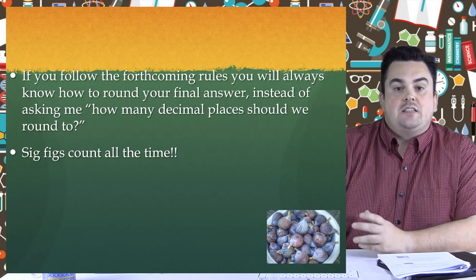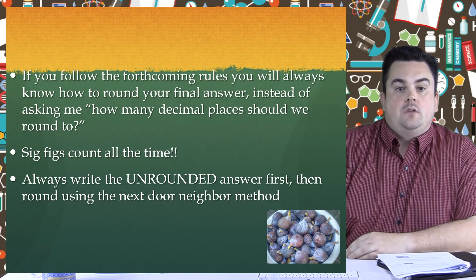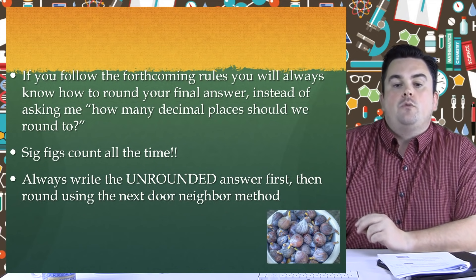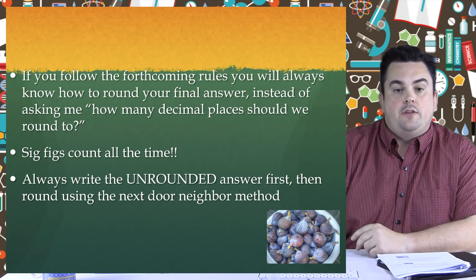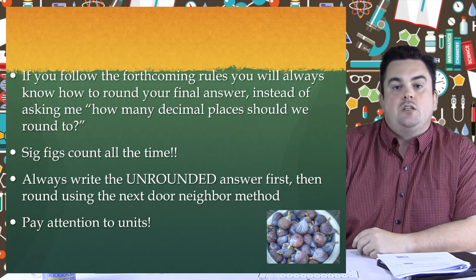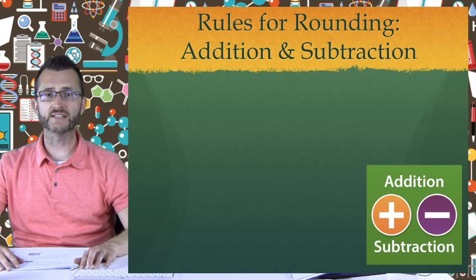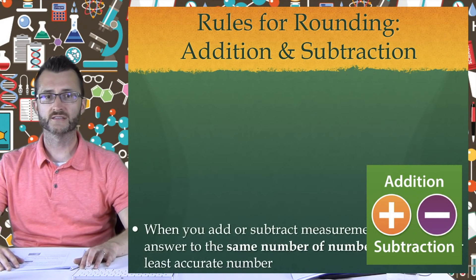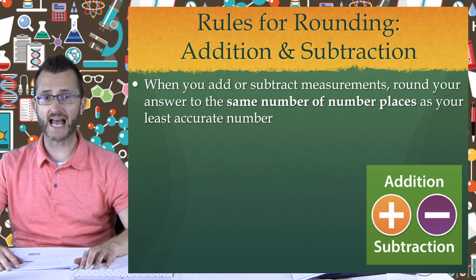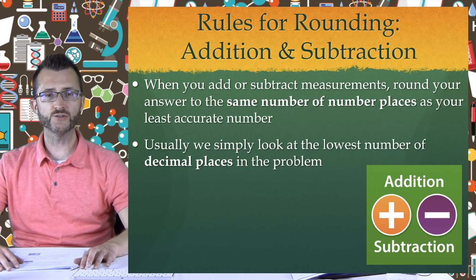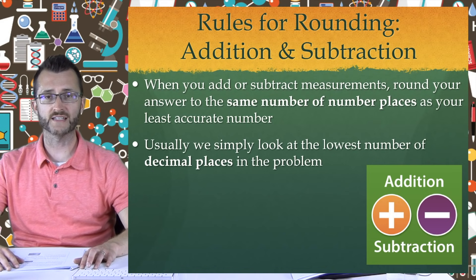Sig figs count all the time. Always write the unrounded answer first, then round using the next-door-neighbor method. Pay attention to units. Rules for rounding — addition and subtraction: when you add or subtract measurements, round your answer to the same number of decimal places as your least accurate number. Usually, we simply look at the lowest number of decimal places in the problem.